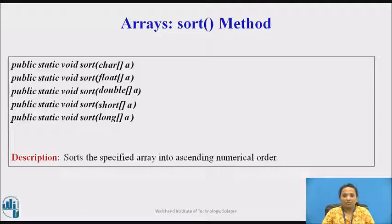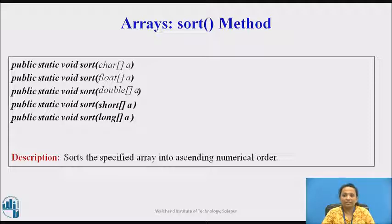Here are a few more overloaded forms of the sort method. The first method takes a character array as parameter. The second takes a float array. The third takes a double array. The fourth takes a short type array, and the fifth takes a long type array as parameter.